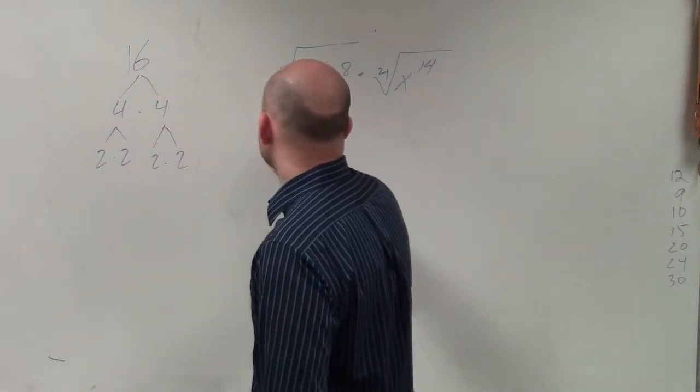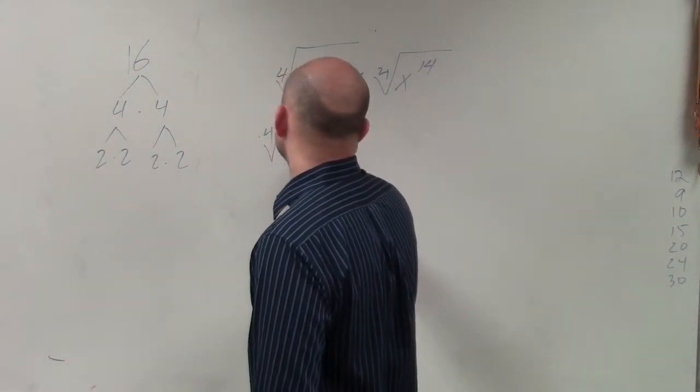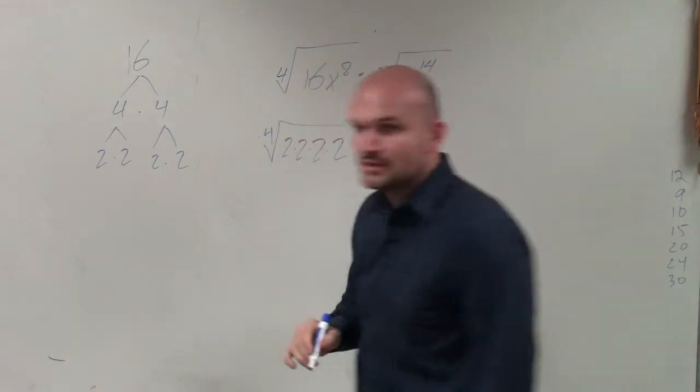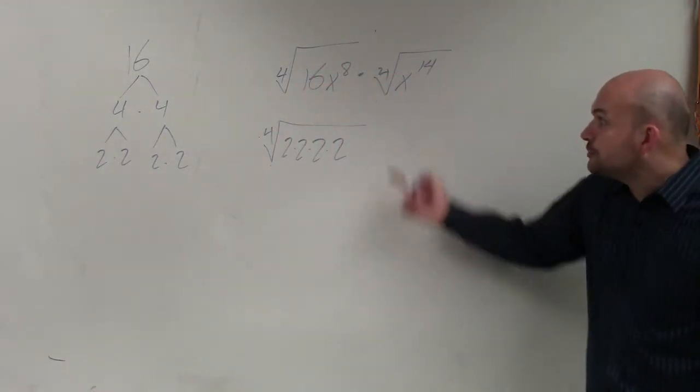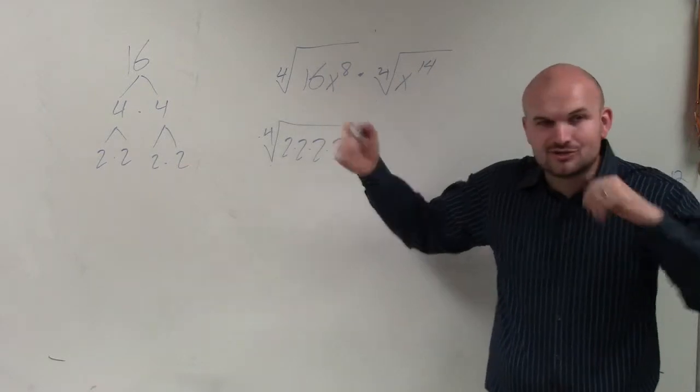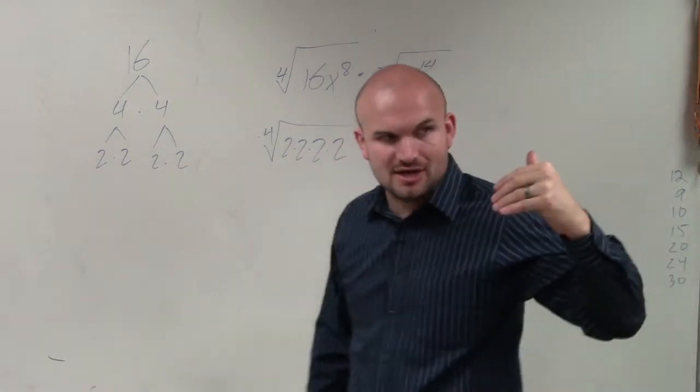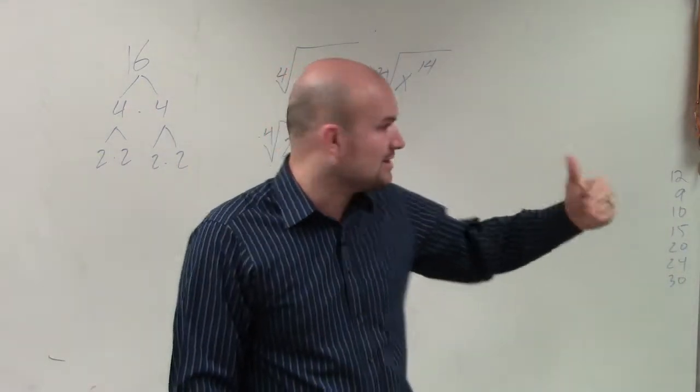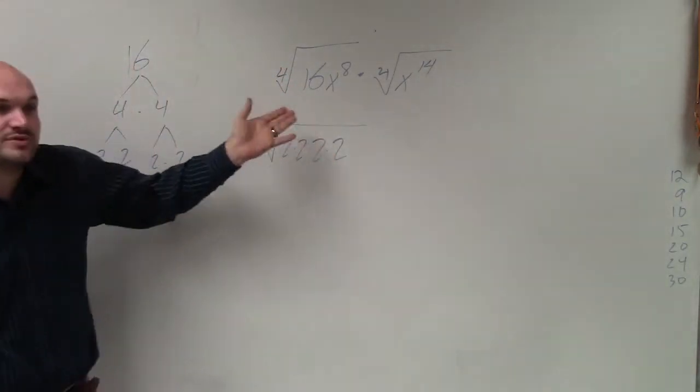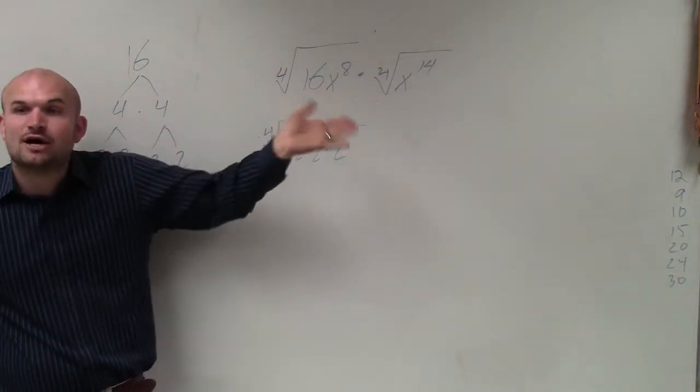So I can rewrite this as the fourth root of 2 times 2 times 2 times 2. Now, you could do the same thing for x to the eighth power, but the main important thing I want you to understand is the fourth root says what number multiplied by itself four times.